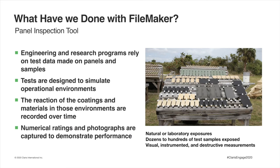The data we're collecting can be numerical ratings, photographs, or instrumented measurements of deterioration — changes in color, changes in gloss, loss of material. Afterwards, we might do post-analysis destructive testing where we pull parts apart, take the coatings off, and look underneath to understand what's going on. We need a system able to take very detailed, structured data but also in an unstructured format so we can capture any information we need, since different tests require measuring different things. That's where FileMaker was really beneficial.